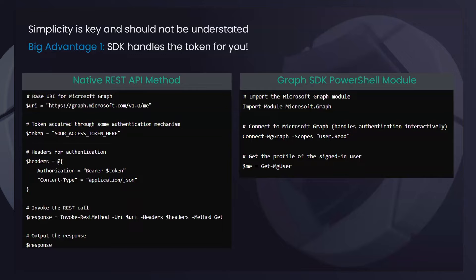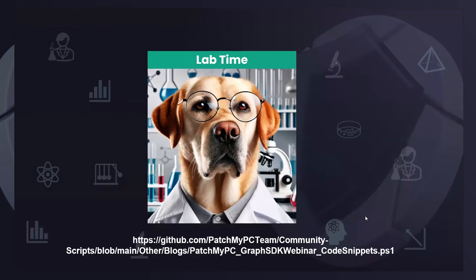The SDK exists for simplicity. If you're using a native REST API method, you have to handle token management yourself — worrying about access token expiry, refresh tokens, and re-authentication. The SDK handles all of that for you: simple authentication, refresh token management, and really good handling of pagination for results coming back from the Graph. There's a link in the resources section with all the available SDKs. We'll be looking at the PowerShell one specifically. Let's jump into it — that's enough PowerPoint.